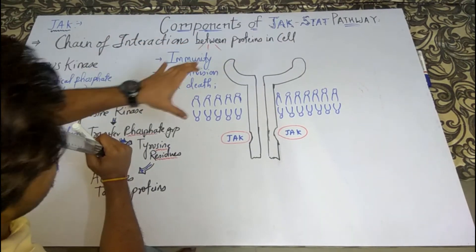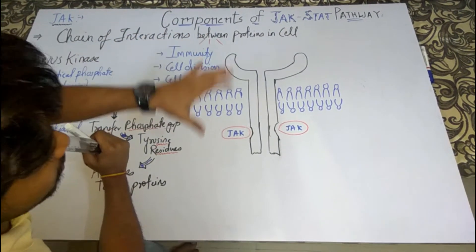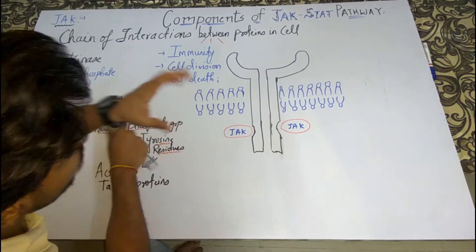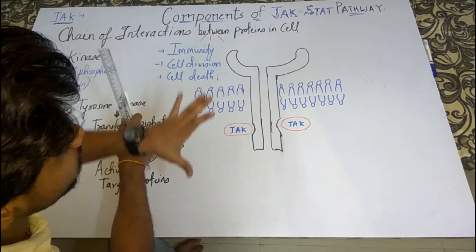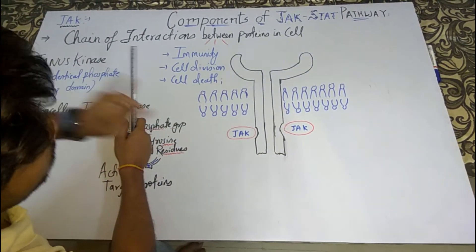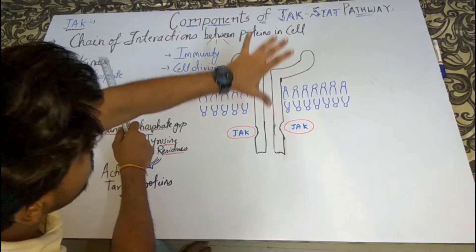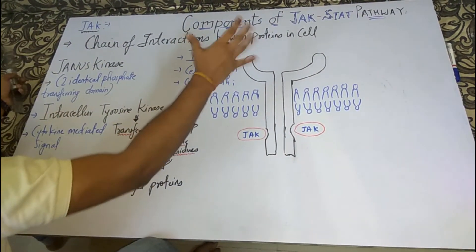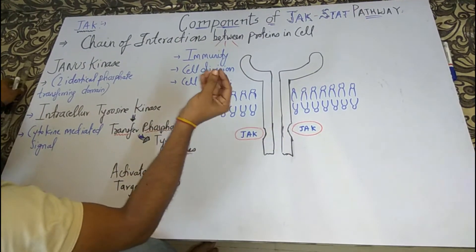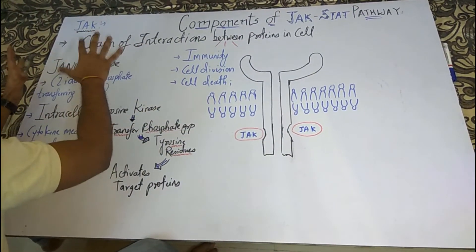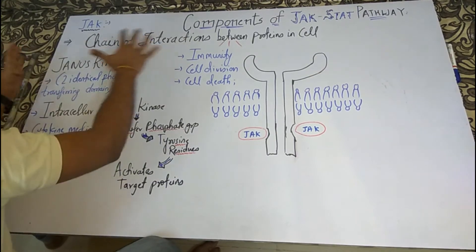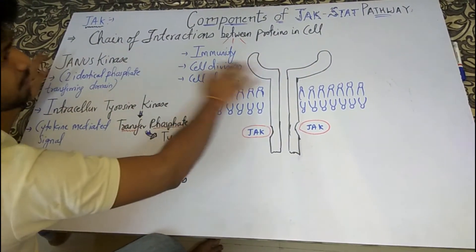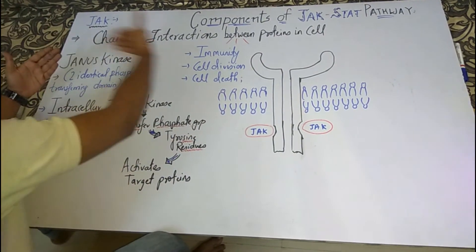Before understanding what the JAK-STAT signaling pathway is and how its mechanism occurs, we first have to understand its components. There are two components: JAK and STAT. The JAK-STAT pathway is a series — a chain of interaction between proteins in the cell. It's a signaling pathway, so obviously it involves a chain of interaction between proteins inside the cells.